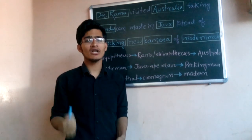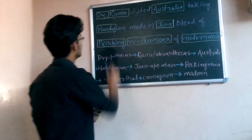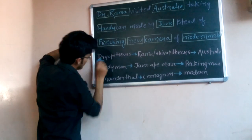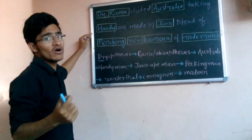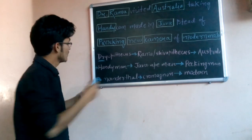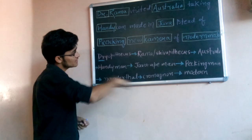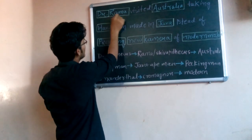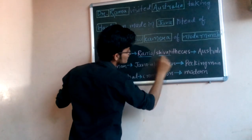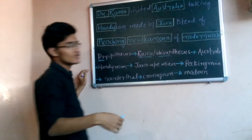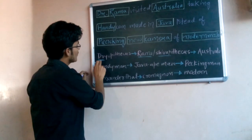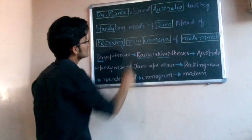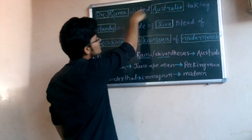In the trick, 'Doctor' contains 'DR', which stands for Dryopithecus — so the first evolved organism in this sequence is Dryopithecus. After that, 'Rama' stands for Ramapithecus or Shivapithecus, which are the two gods of India and can be easily memorized. 'Visited' has no significance in this trick.